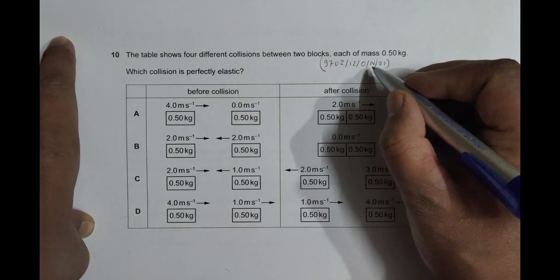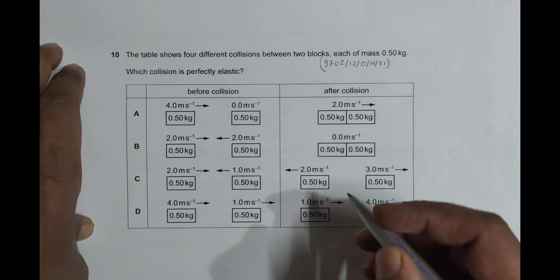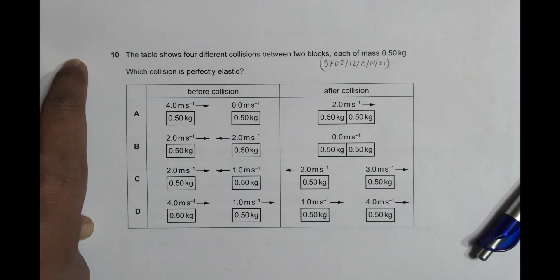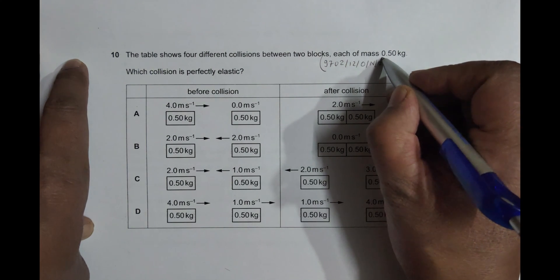Hello folks, this is 2021 October November Paper 12, question number 10. It is concerned with the chapter Dynamics. It's about a collision. The table shows four different collisions between two blocks, each of mass 0.5 kg. Which collision is perfectly elastic? So we have to identify which collision is perfectly elastic.